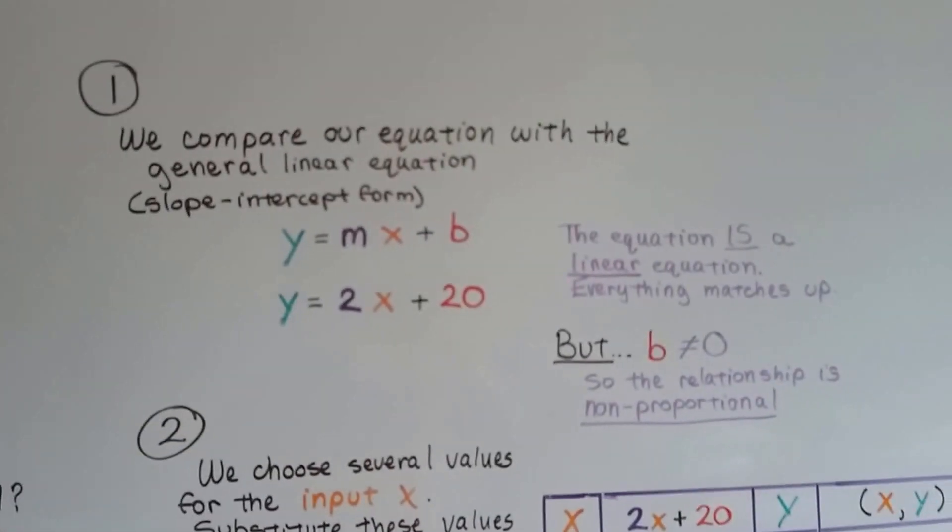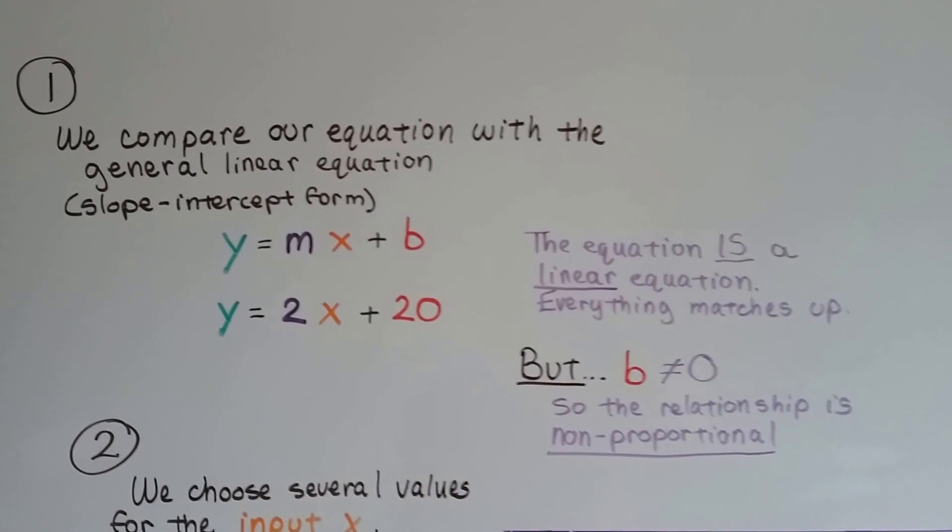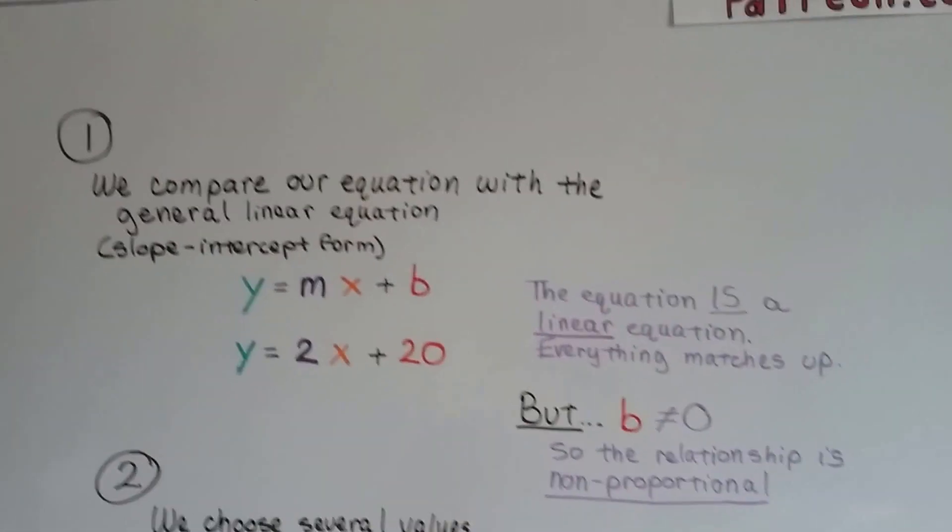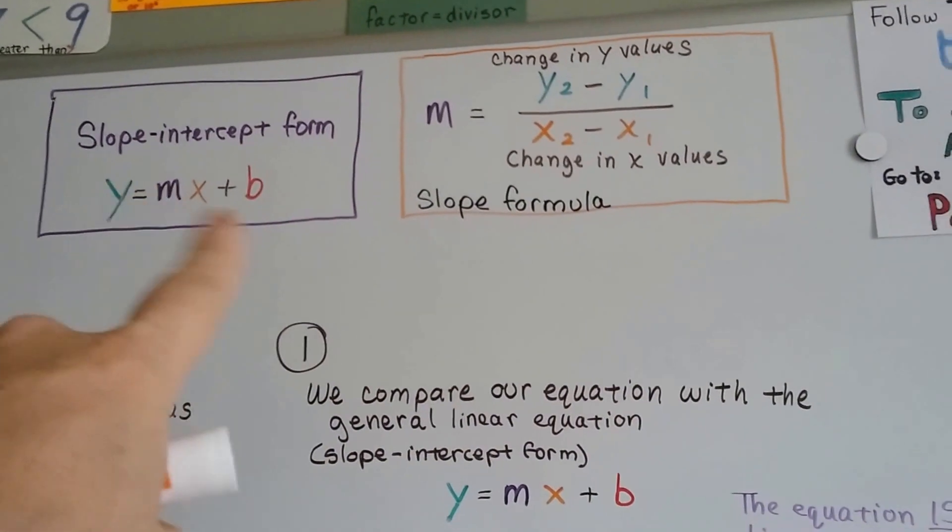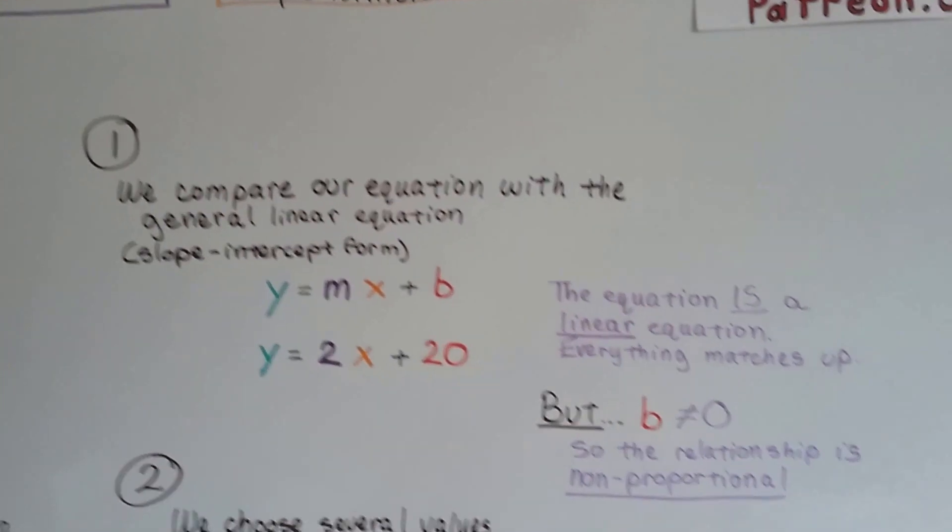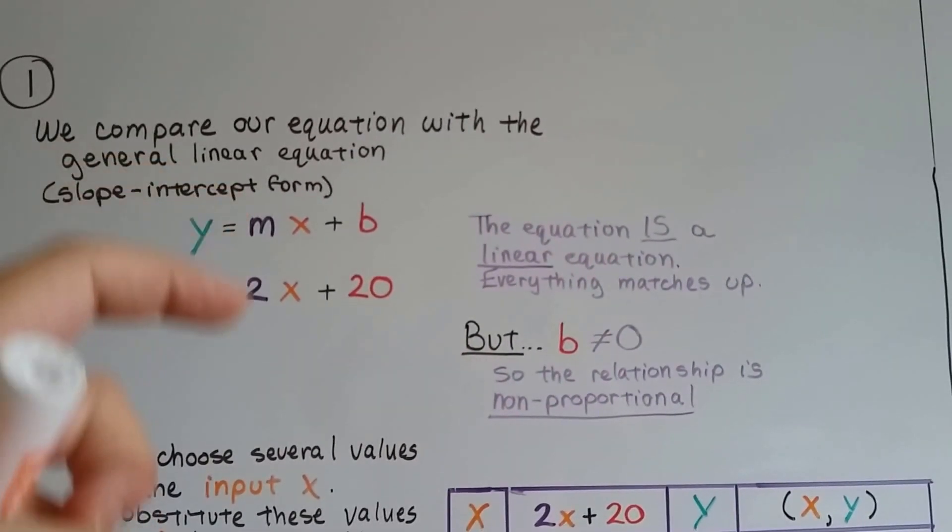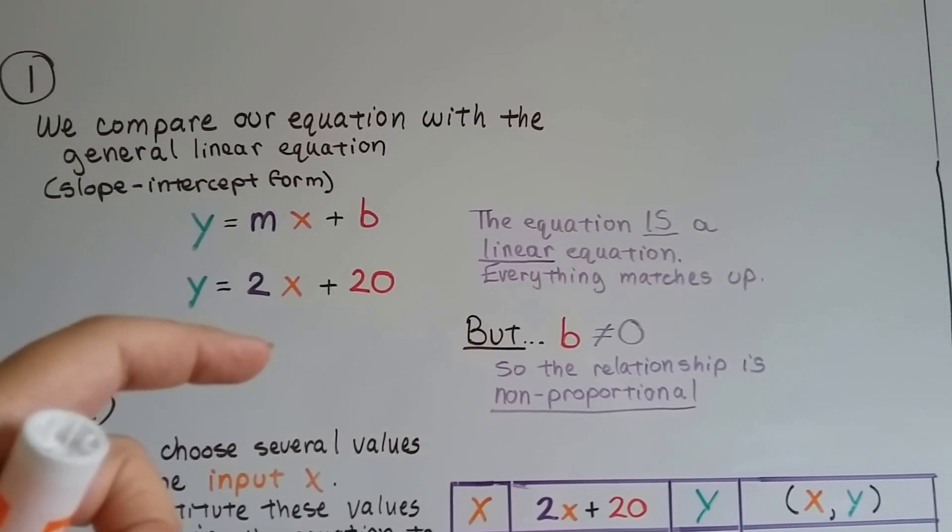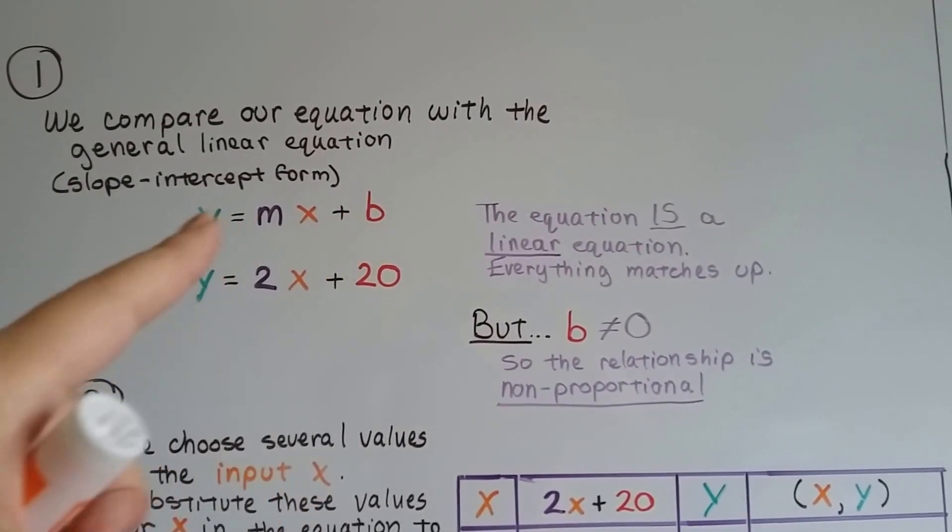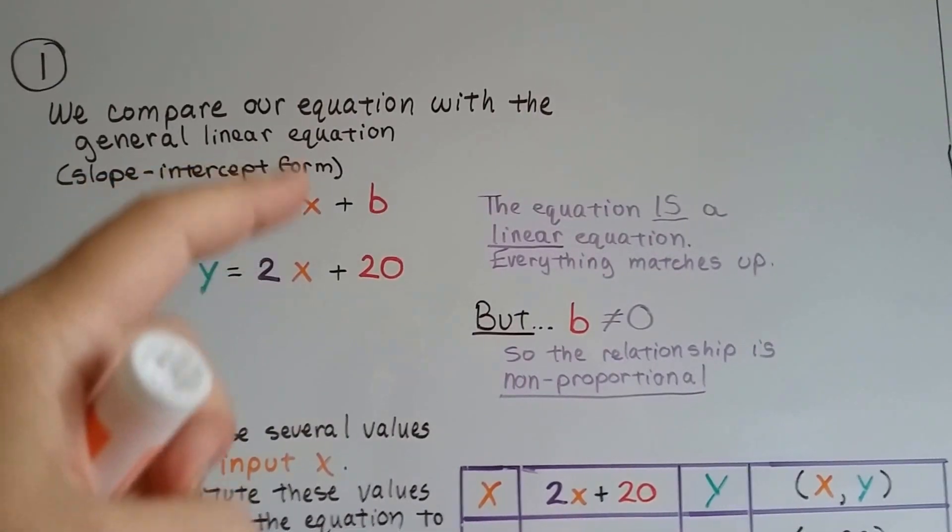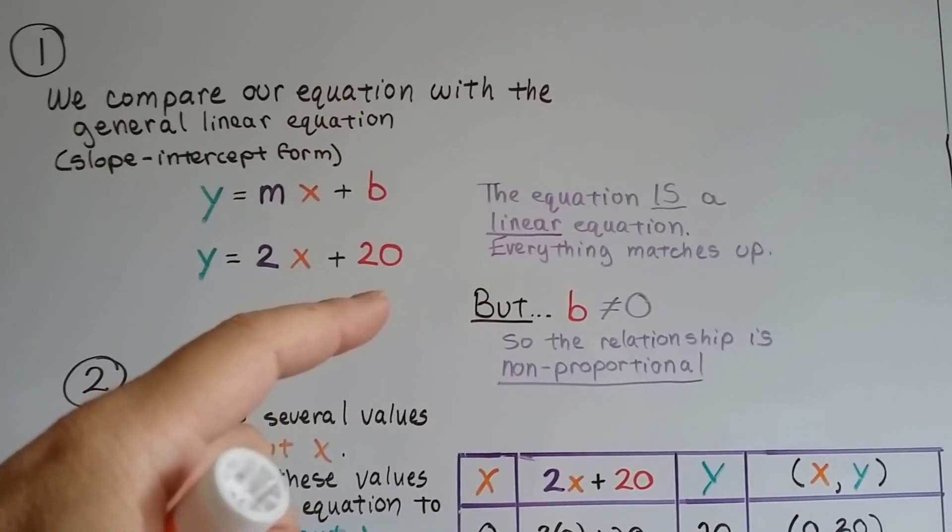The first thing we do is we compare our equation with the general linear equation, that slope-intercept form. That nicely color-coded one I've got here. And we can see that the equation is a linear equation. If it matches up to this, it's a linear equation. And look, everything matches up. My colors help, don't they?